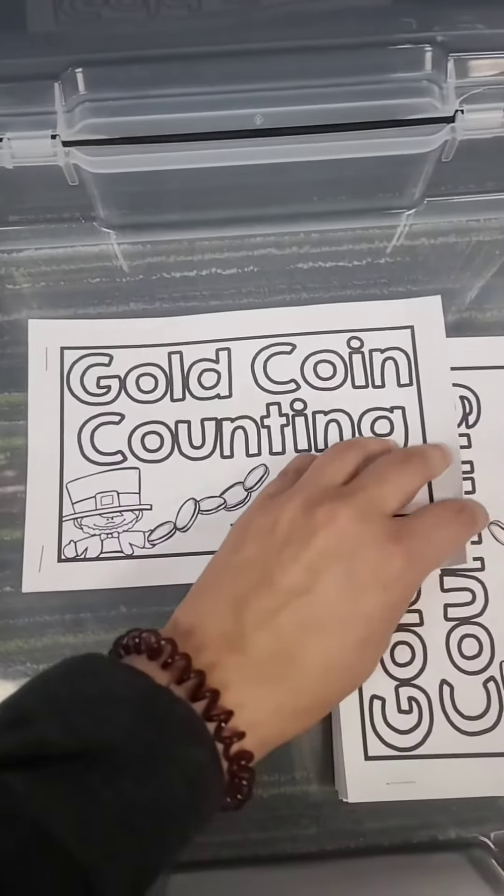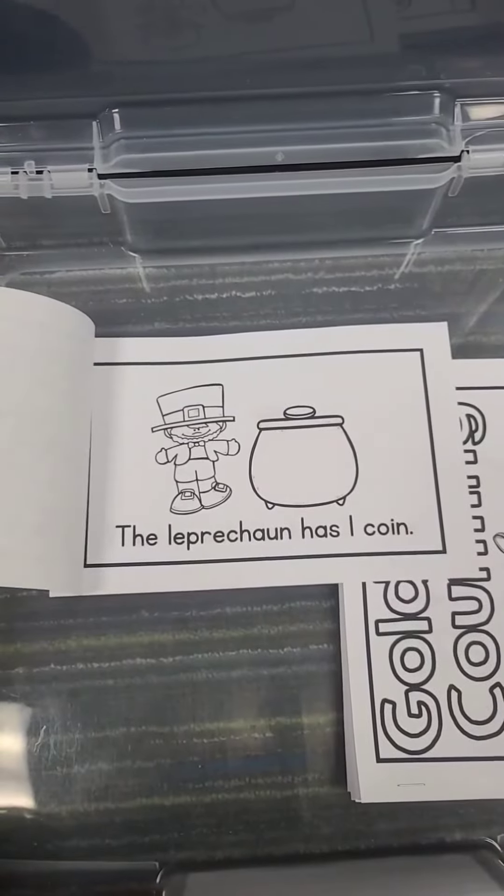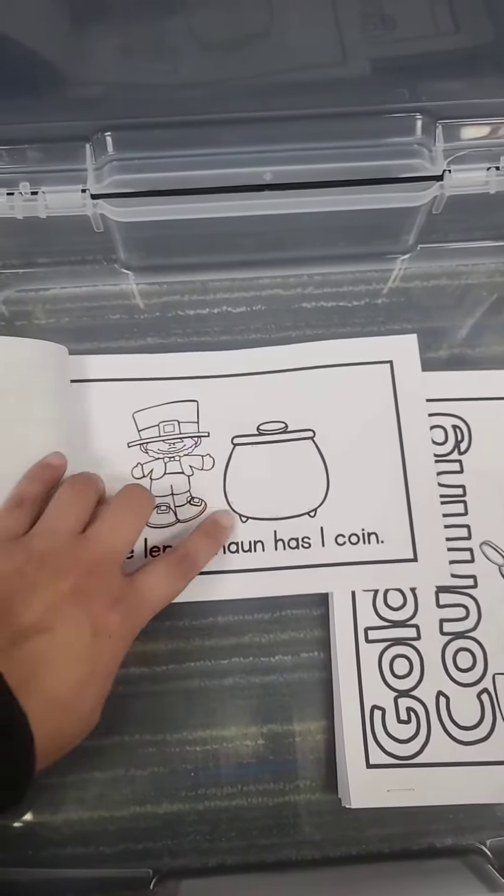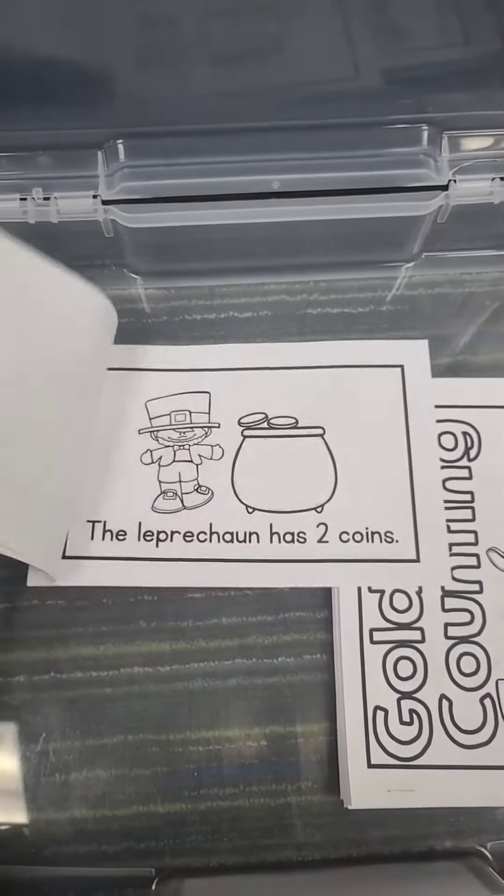Center number six: in this center, they're going to count the coins. So they're going to read and also write that amount of coins on the pot.